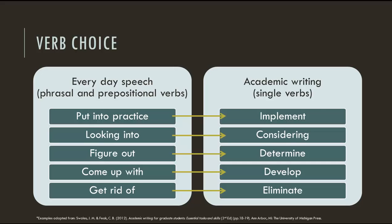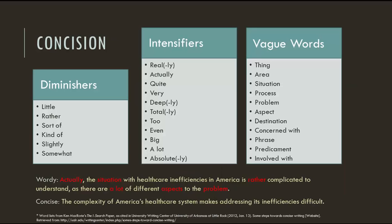Concision is an important feature of academic writing overall. In most scientific disciplines, simple, straightforward language is preferred to the complex, descriptive, and figurative language used in many humanities fields. Your writing should convey your ideas in the clearest way possible, with the fewest words possible. A good place to start might be these lists of diminishers, intensifiers, and vague words, which Ken McCrory discusses in his book The I Search Paper. Many of these words can be eliminated without changing the meaning of the sentence, or replaced with a more concise and precise alternative.